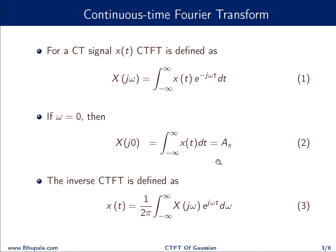So X(j0) is nothing but the area of the time domain signal x(t). Also, the inverse Fourier transform is defined as x(t) = (1/2π) integral from minus infinity to infinity of X(jω) e^(jωt) dω. We will utilize the definition of the Fourier transform, the value at ω=0, and the inverse Fourier transform to evaluate the Fourier transform of the Gaussian.